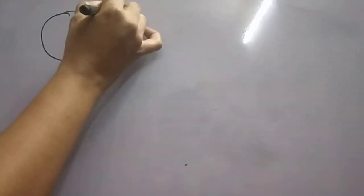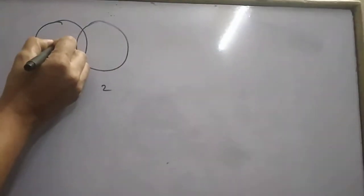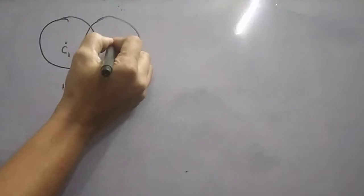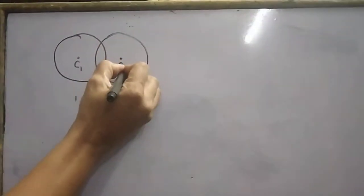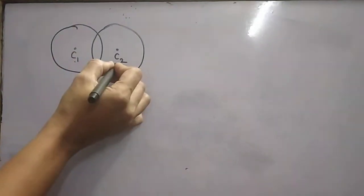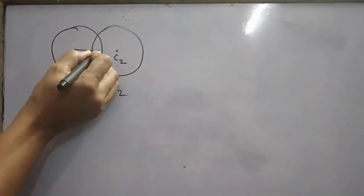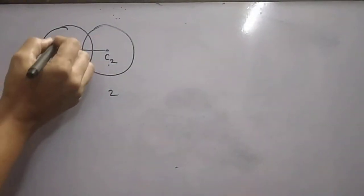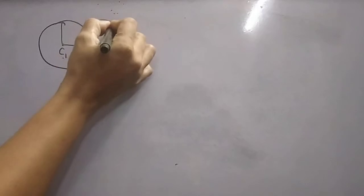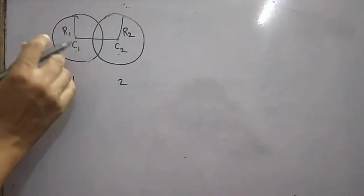Here are two spheres — sphere 1 and sphere 2. This is the center of sphere 1 and this is the center of sphere 2, labeled C1 and C2, joined by the principal axis. This is the radius R1 and R2, which are the radii of each sphere.